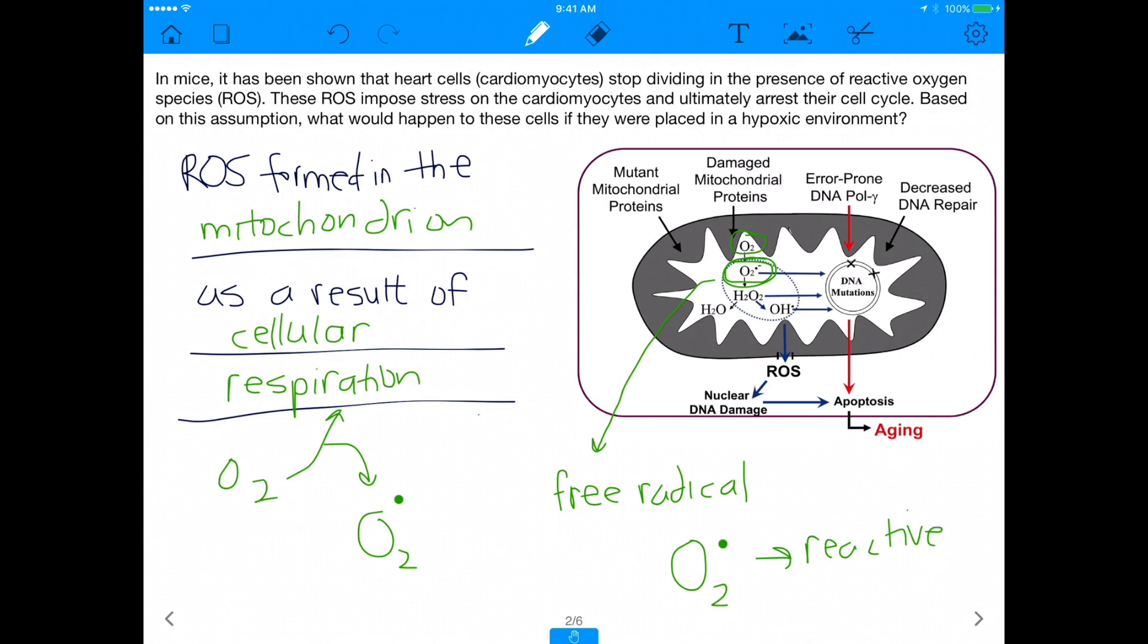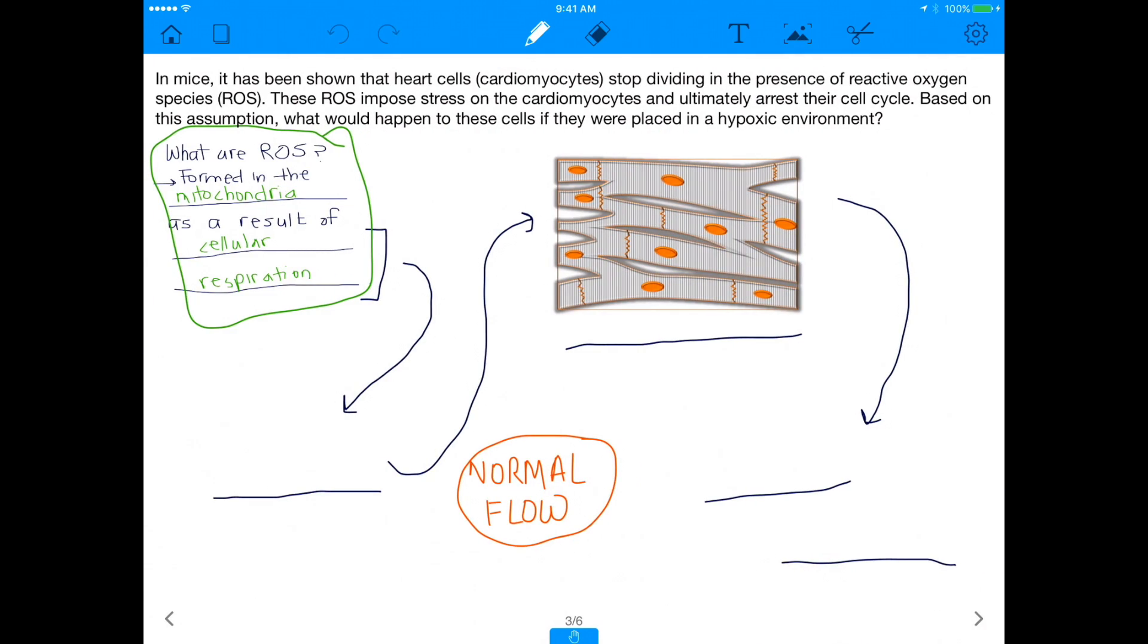And so assuming we understand that, let's now understand what overall process is being described. So you'll see the question is written always at the top to give you context. But basically I'm telling you, as a result of cellular respiration, what we're going to see, right, if we follow this arrow from cellular respiration, we'll get some reactive oxygen species, right?